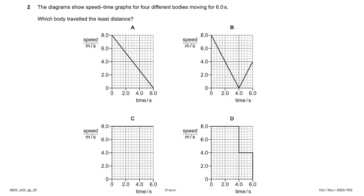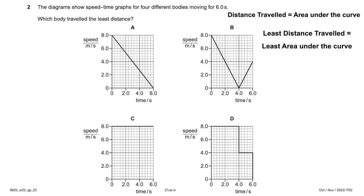The diagram shows a speed-time graph for four different bodies moving for six seconds. Which body travels the least distance? The distance traveled in a speed-time graph is the area under the curve. We want the least area. By looking, C and D are not the least because they have more area than A and B.